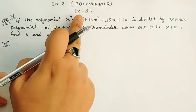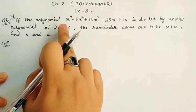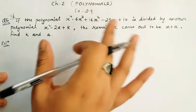we have given you that if our first polynomial is divided by the second polynomial, then the remainder is equal to x + a. But when we divide by actual division method,